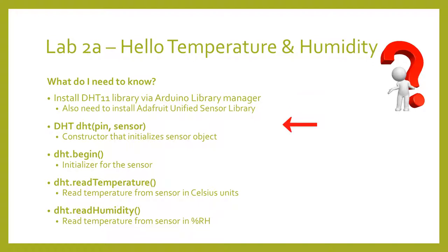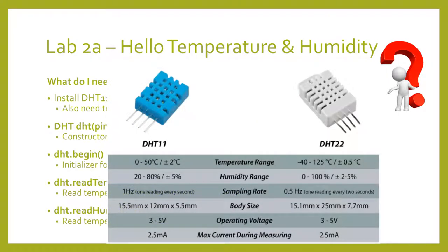Next, we'll need to initialize our library. The first thing we do is create an object based on the DHT class — very similar to creating an int or a float variable. We're going to create an object of type DHT, and we can pass parameters into it when we create it: the pin we'll be communicating with the sensor on, and the type of sensor. The DHT11, which we'll be using, has plus or minus 2 degrees Celsius of temperature accuracy and plus or minus 5% accuracy for relative humidity. There's also the DHT22, which has better accuracy but at higher cost.